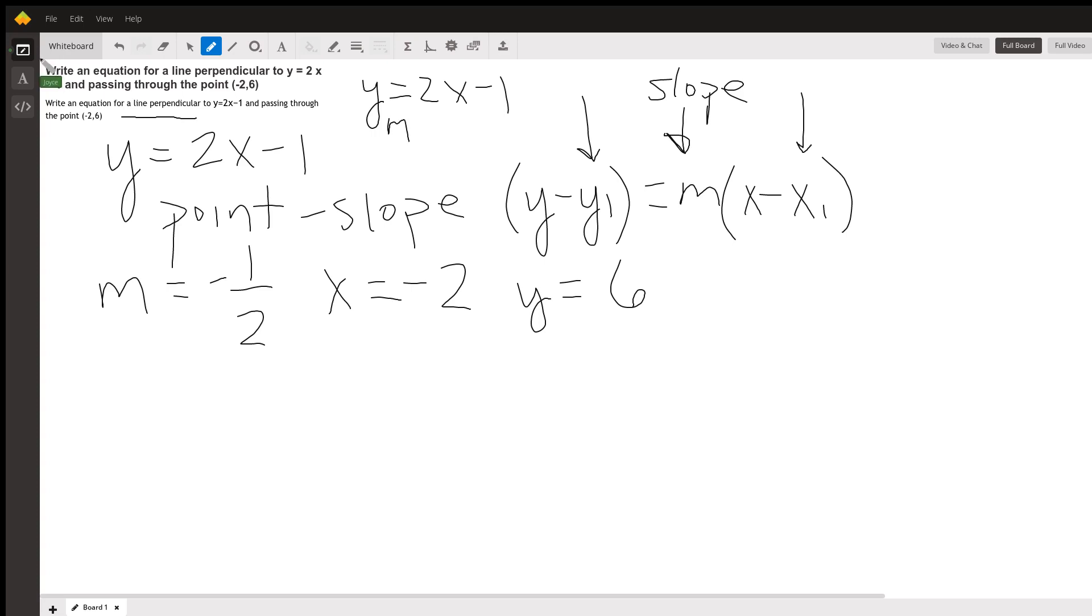So if the slope of this line is 2, which it is, the perpendicular slope is going to be negative and then the reciprocal of 2, which is 1 over 2, and that's called the perpendicular slope. So we're going to write the equation for a line that has the slope m of negative one-half.